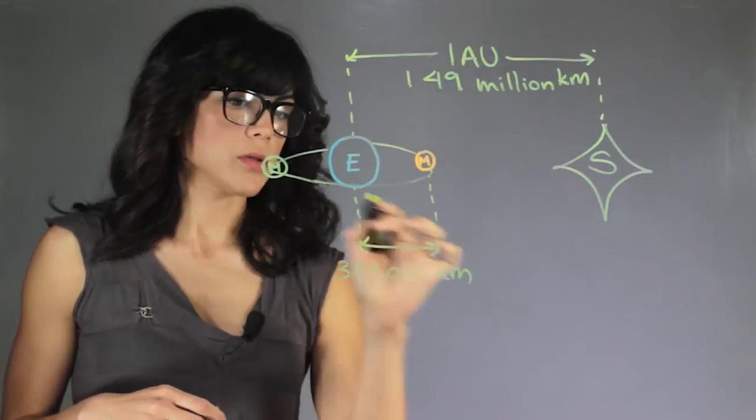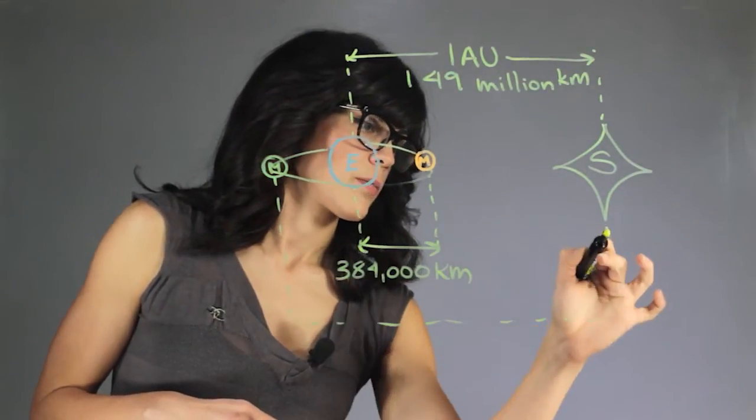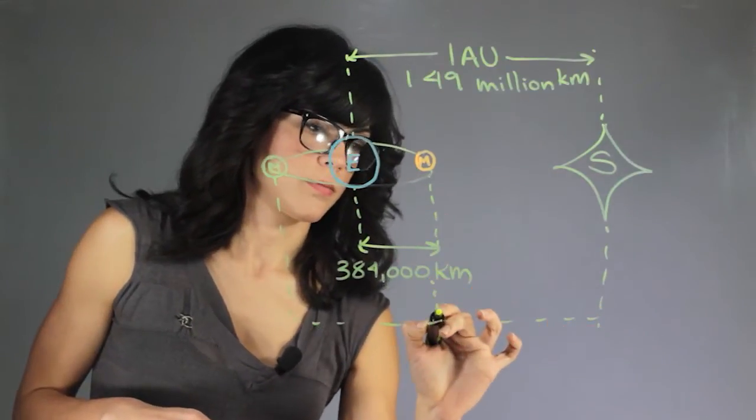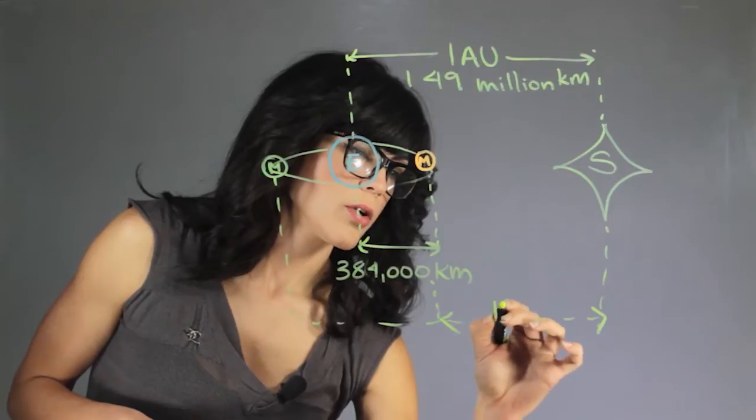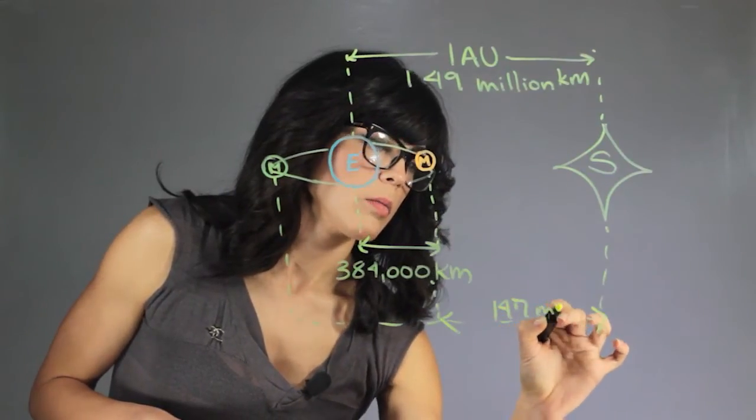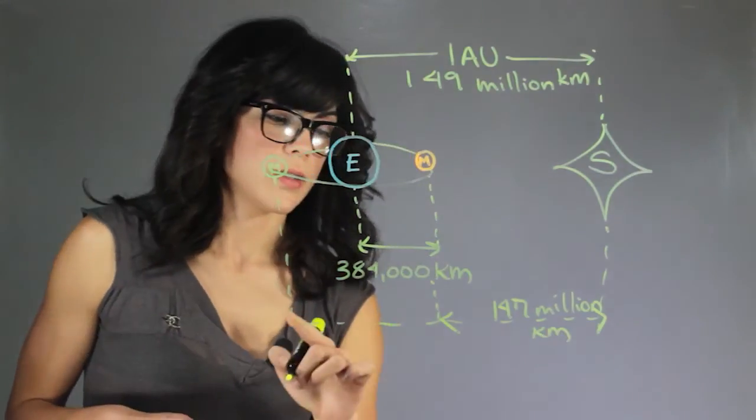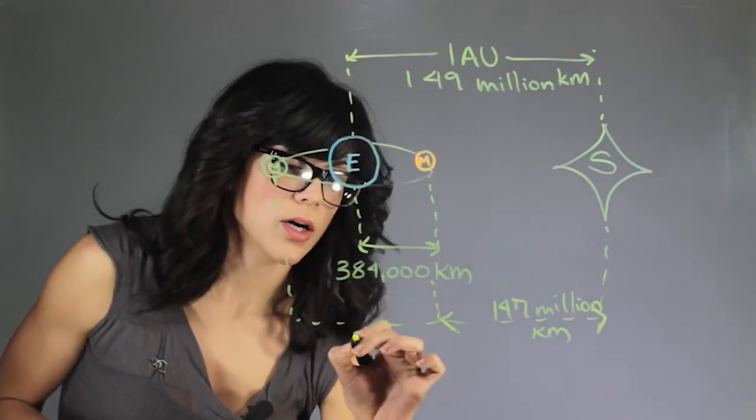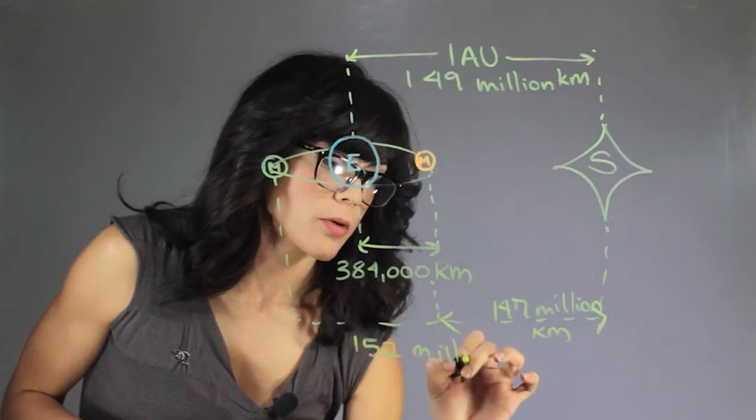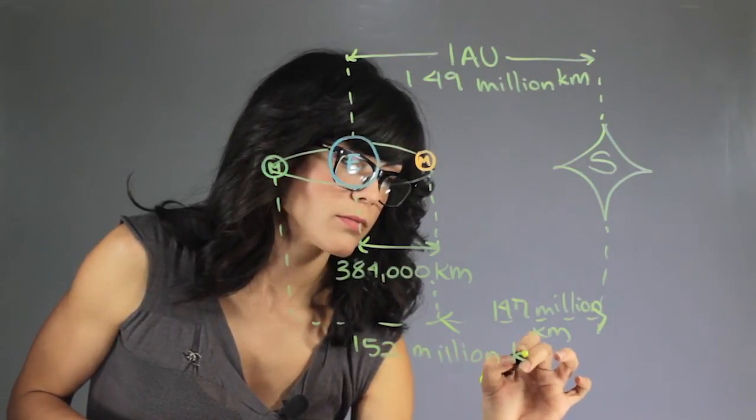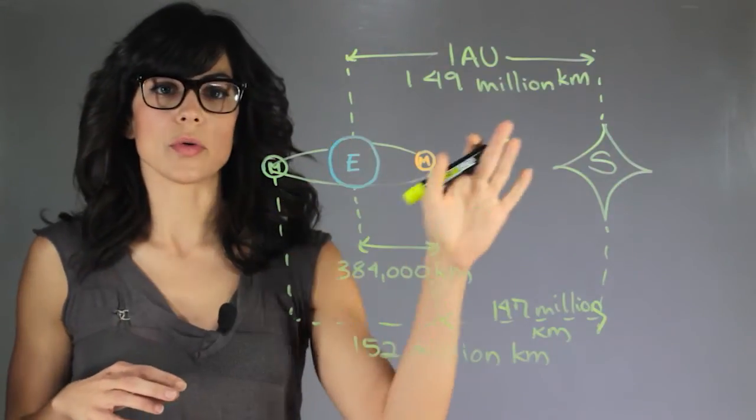So the closest point and the furthest point so from here to here is 147 million kilometers and this whole distance is 152 million kilometers. So these are the distances in the Earth, Moon and Sun system.